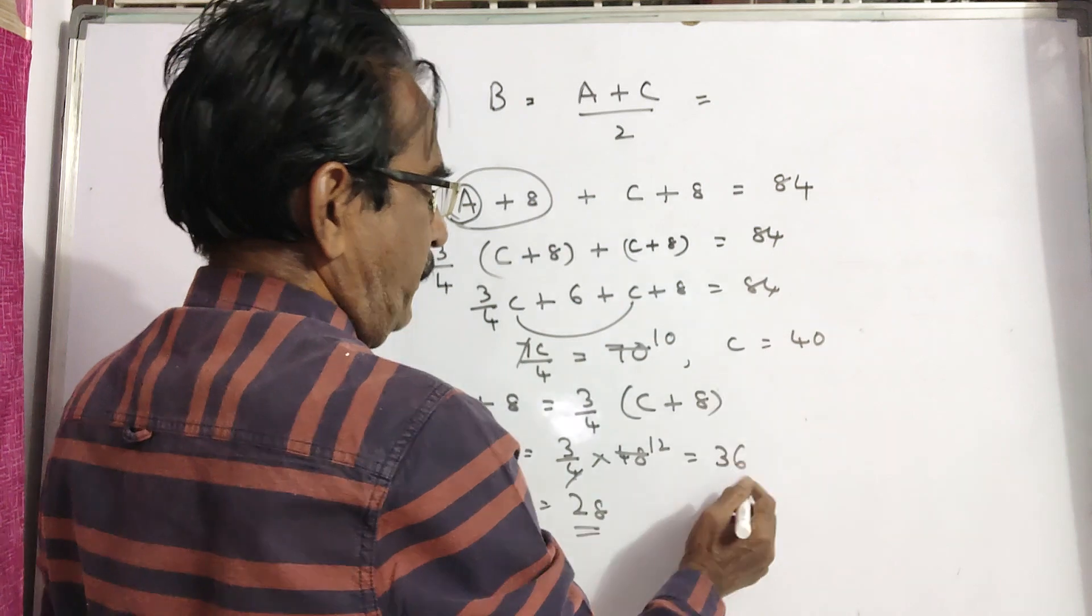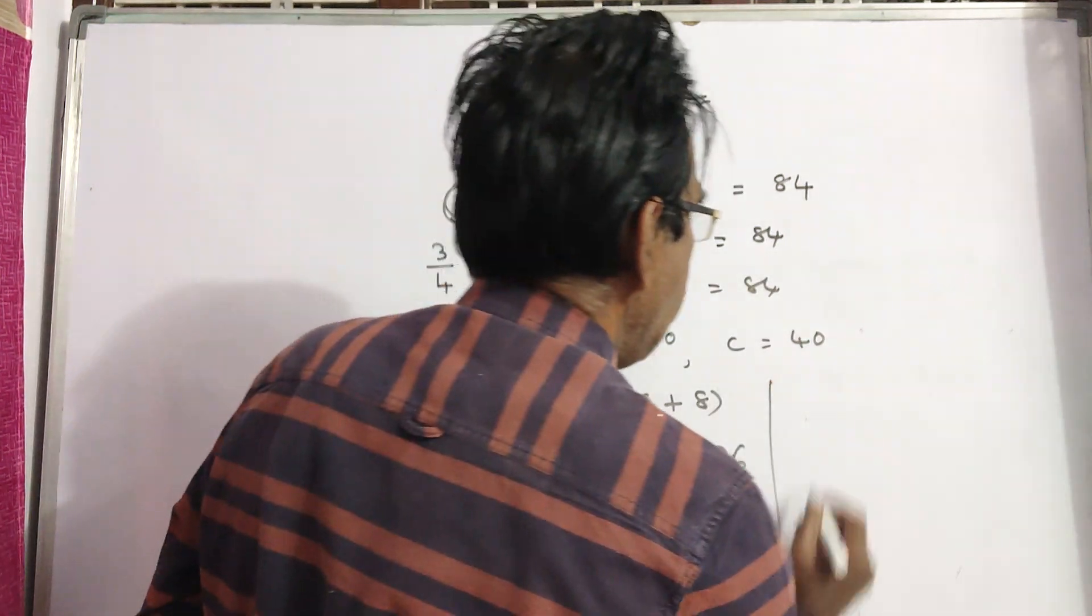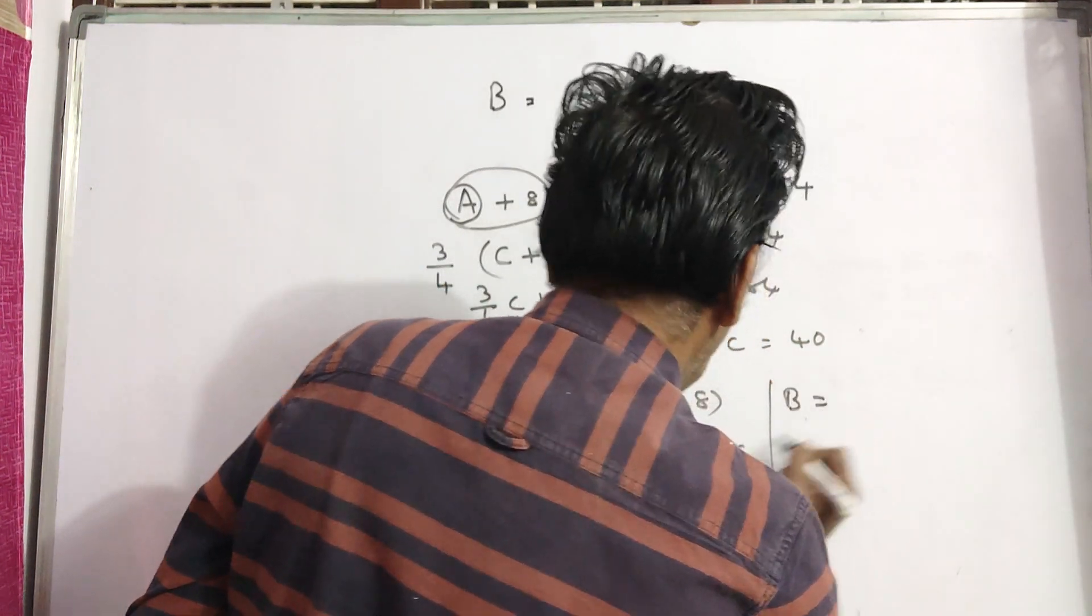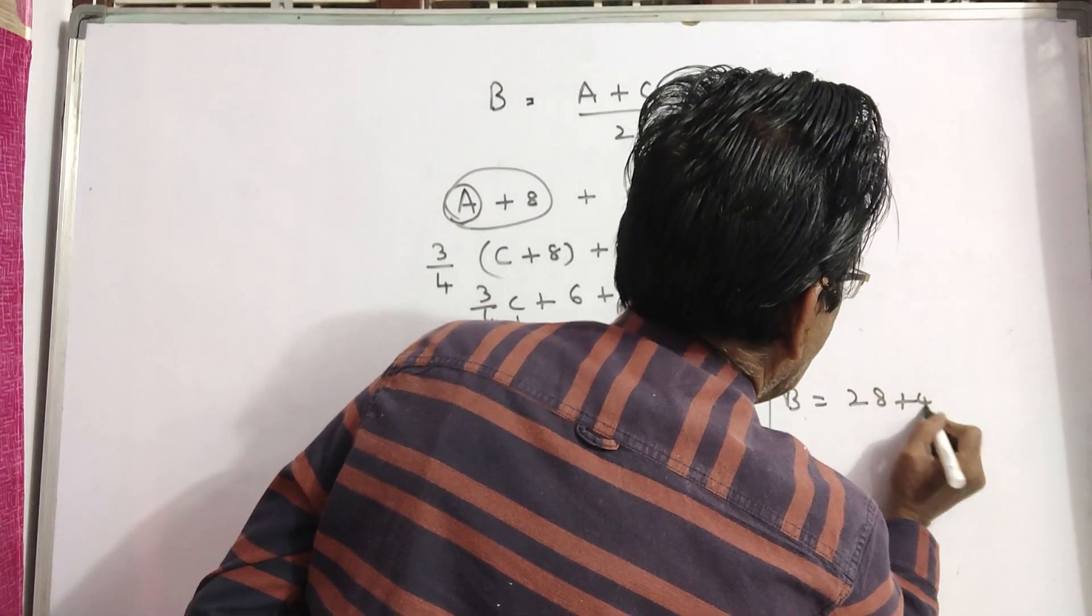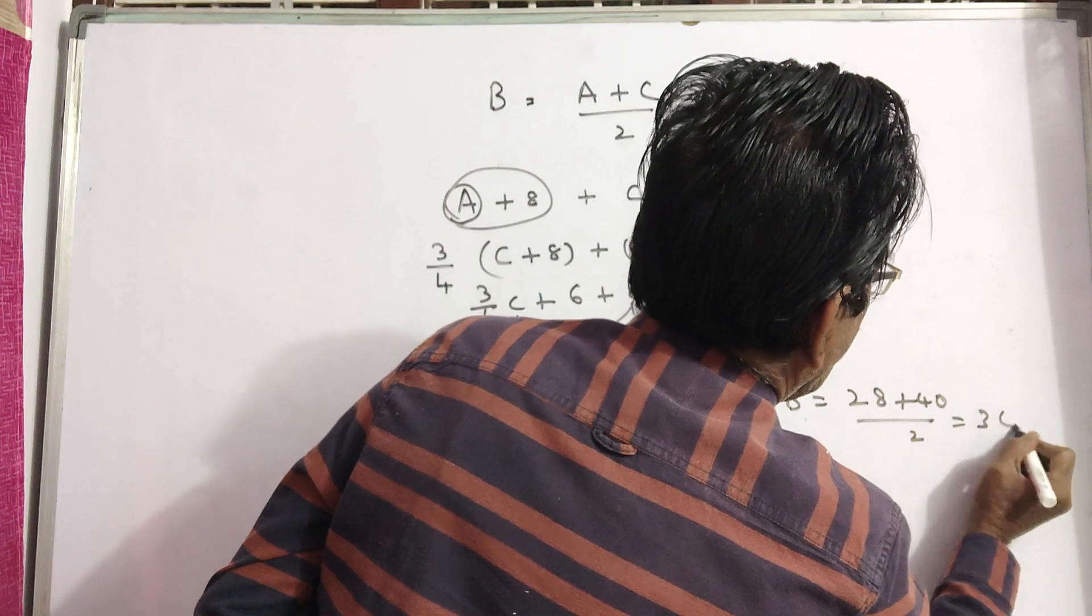Then B is equal to A plus C by 2. That is 28 plus 40 by 2, 68 by 2, which is 34.